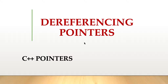So far we have been looking at what pointers are stored, that is what address the pointer is pointing to. This is not very useful until we know how to get the value of the variable that the pointer is pointing to. The process of getting the stored value of the variable that the pointer is pointing to is called dereferencing the pointer.